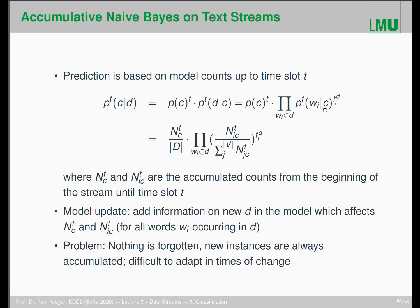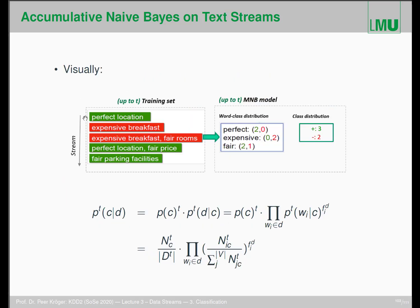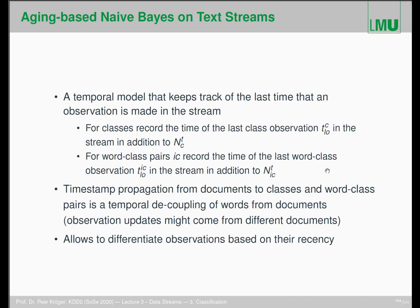Here is the visualization: we assume one document per time slot arrives through the stream, and we just accumulate all counts so far. When something new arrives, we accumulate again. Nothing is forgotten, so new instances are always accumulated — making it difficult to adapt to changes over time.